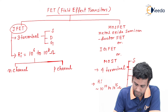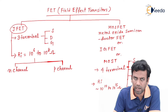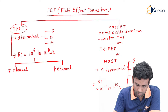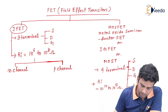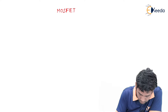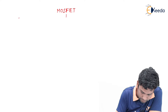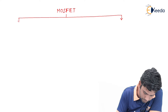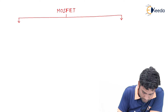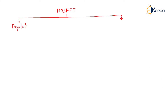That means the MOSFET device will have a very high value of input impedance compared to the junction field effect transistor. Now, let us classify this MOSFET. MOSFET devices can be classified into two groups: the first one is depletion type MOSFET and the second one is enhancement type MOSFET.